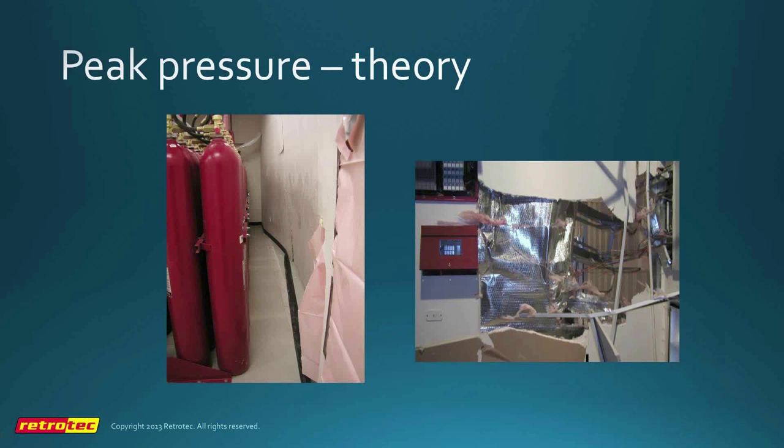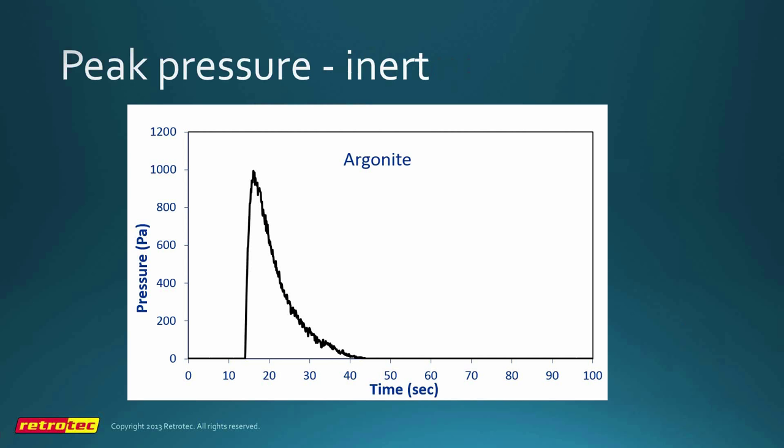As far as peak pressure theory is concerned, with an inert gas being discharged, there is a positive pressure spike that occurs for usually around 10 seconds and then falls off exponentially. When the valve opens on an inert system, we get the maximum flow rate virtually instantaneously, and then it starts to drop off as the pressure in the tank drops — and that causes the pressure spike.